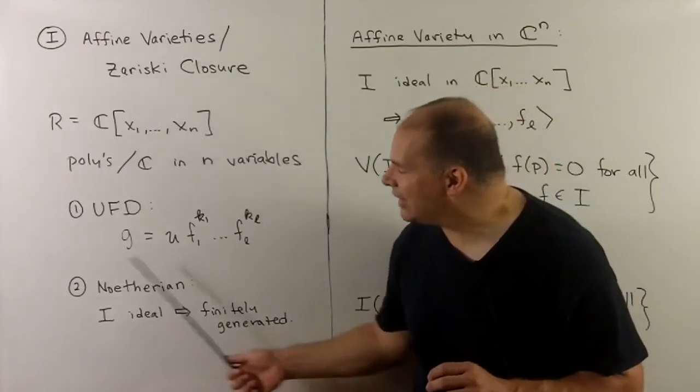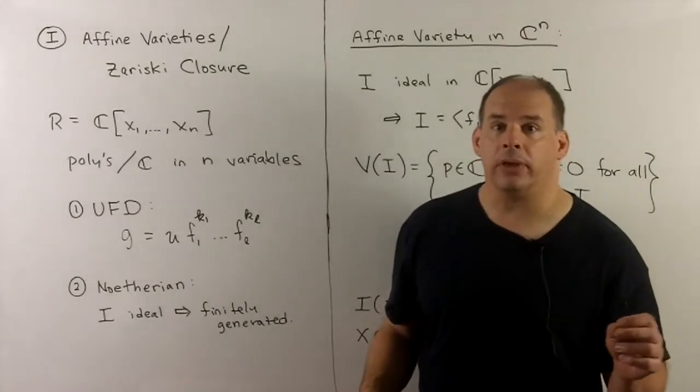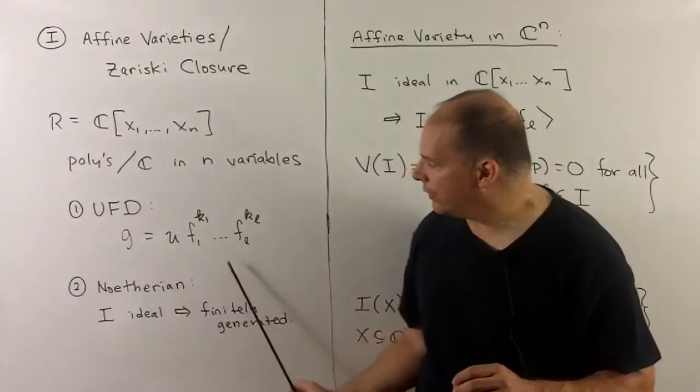So that means if we take any ideal I inside of R, that ideal must be finitely generated. Note, UFD doesn't necessarily imply Noetherian.